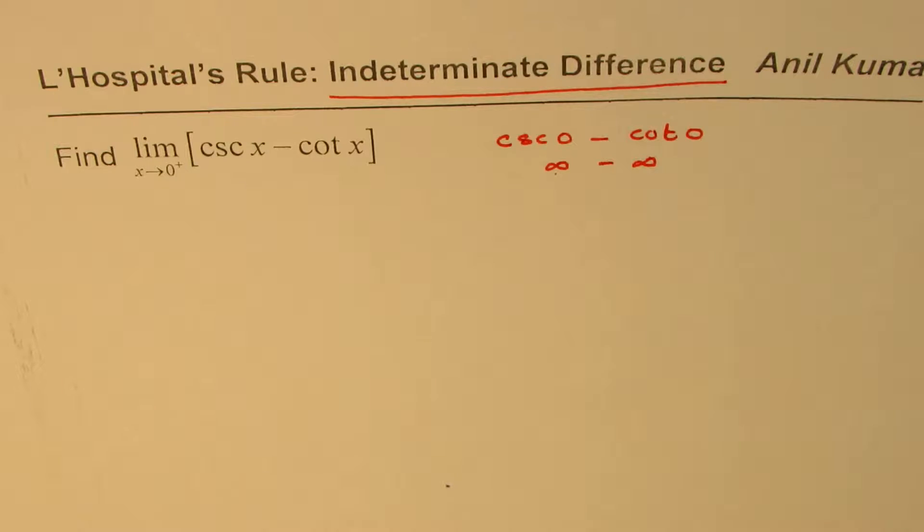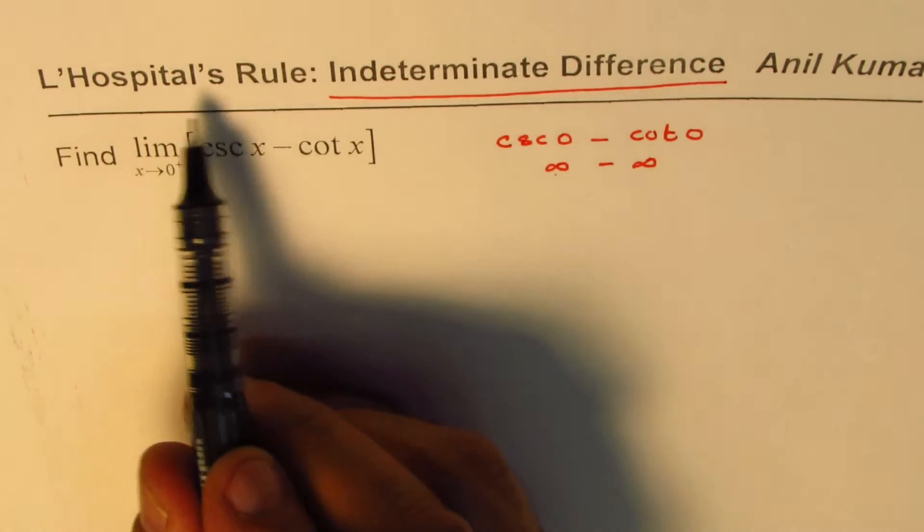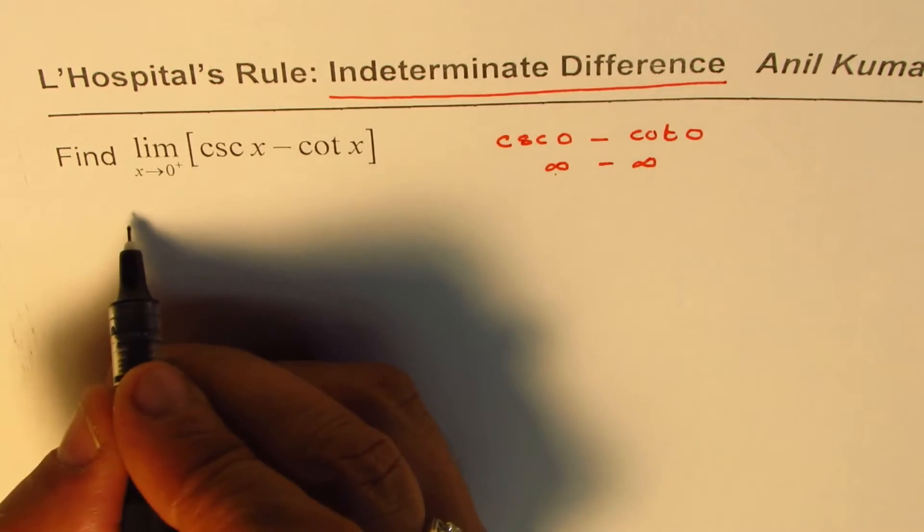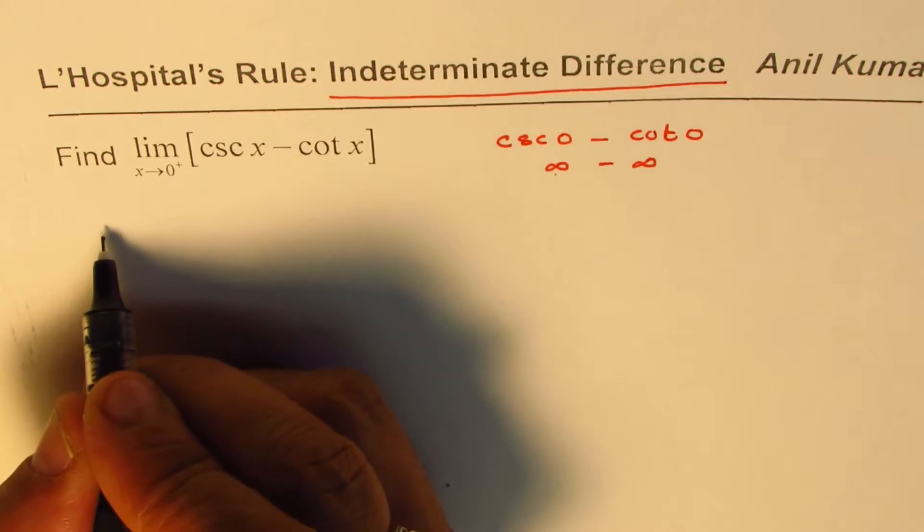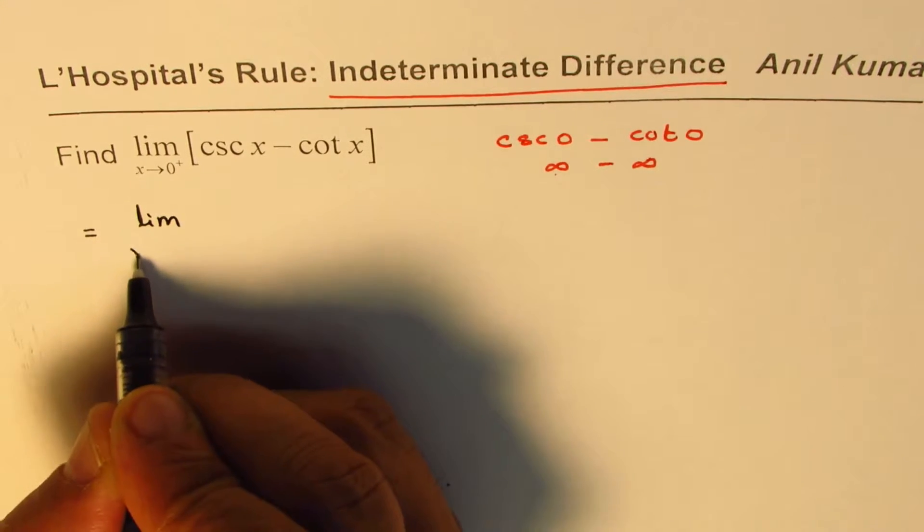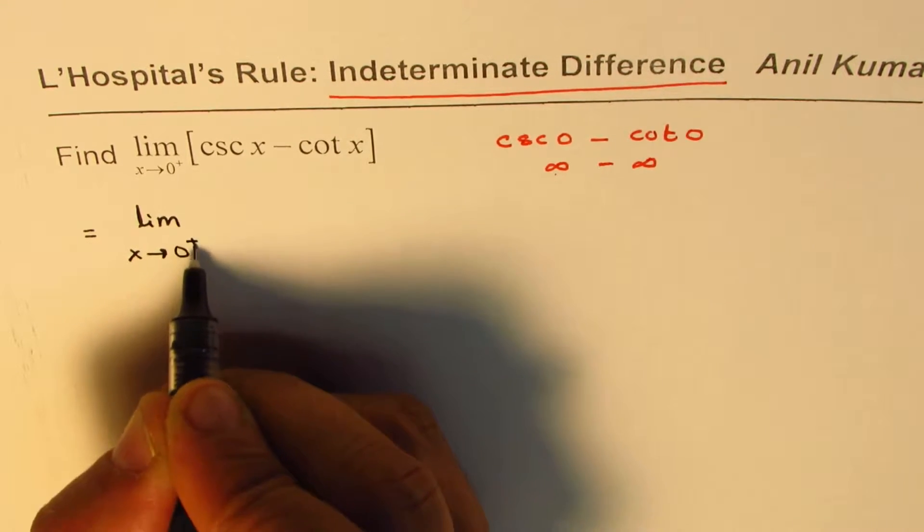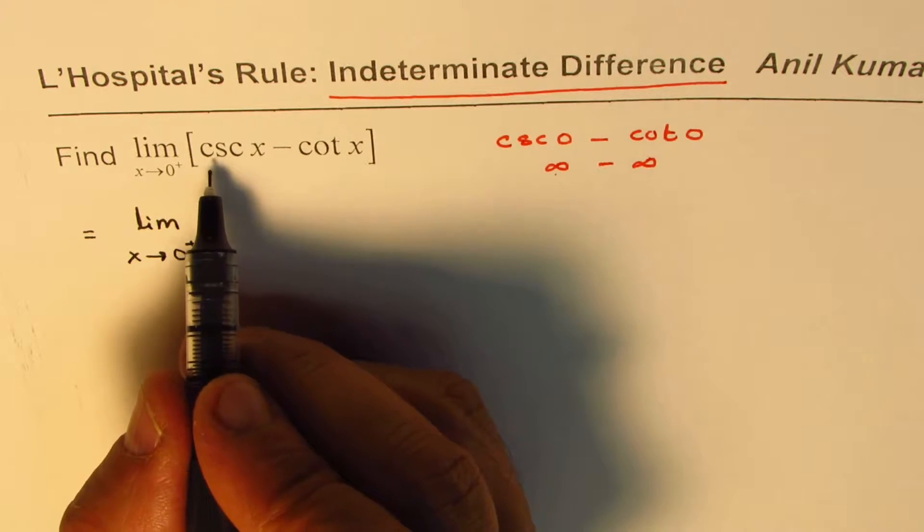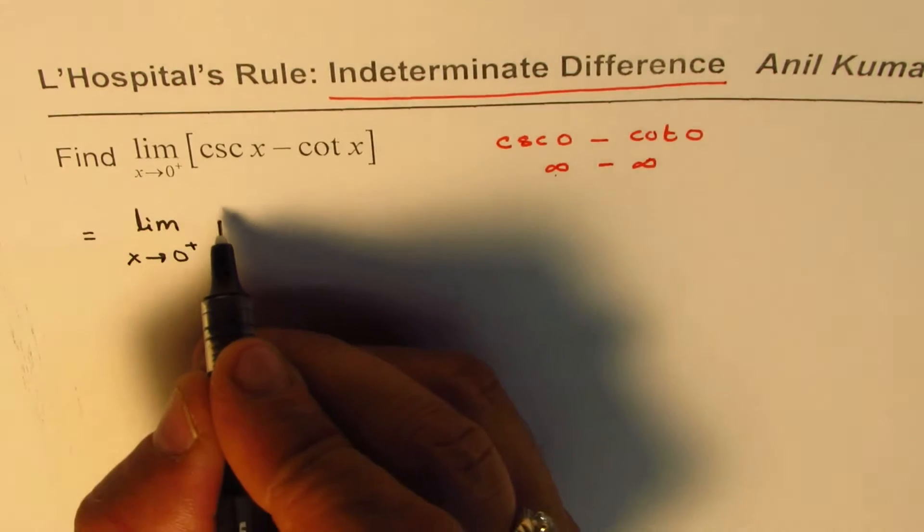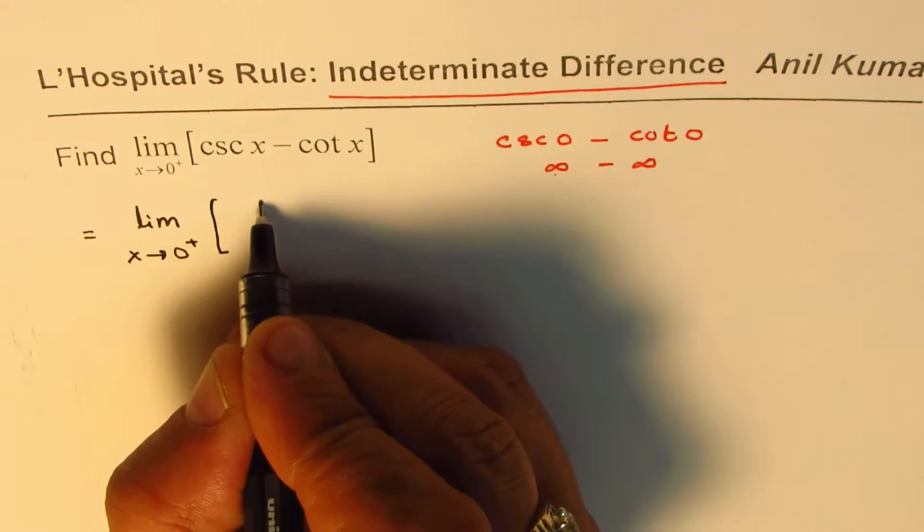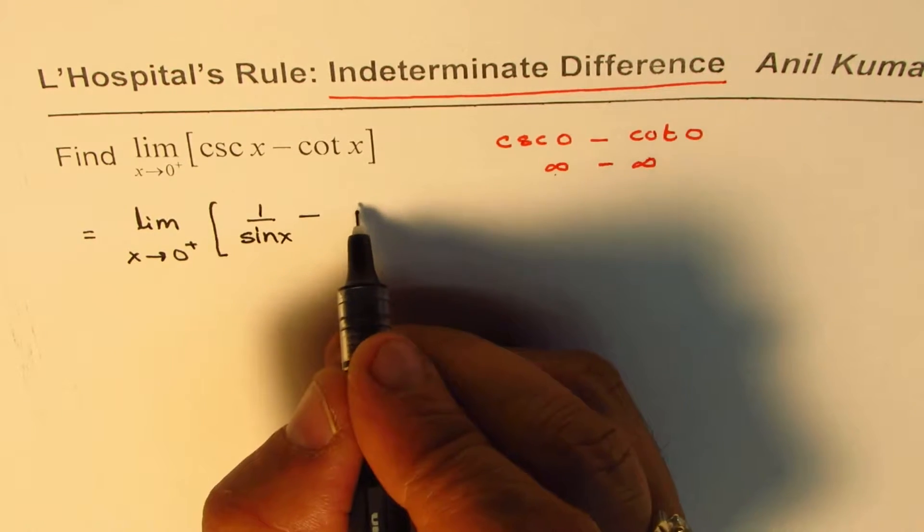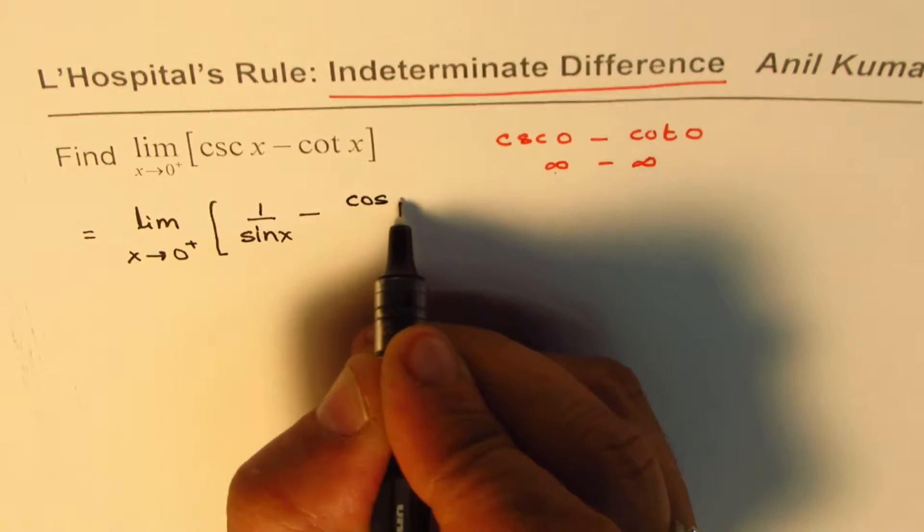Now in such cases we can always apply L'Hôpital's rule to solve and this is how you do it. So let me rewrite this function as equal to limit x approaches 0 from the right side. Now cosecant and cotangent, let's write them in sine and cosine. So we get cosecant is 1 over sine x. Cotangent is cos x over sine x.